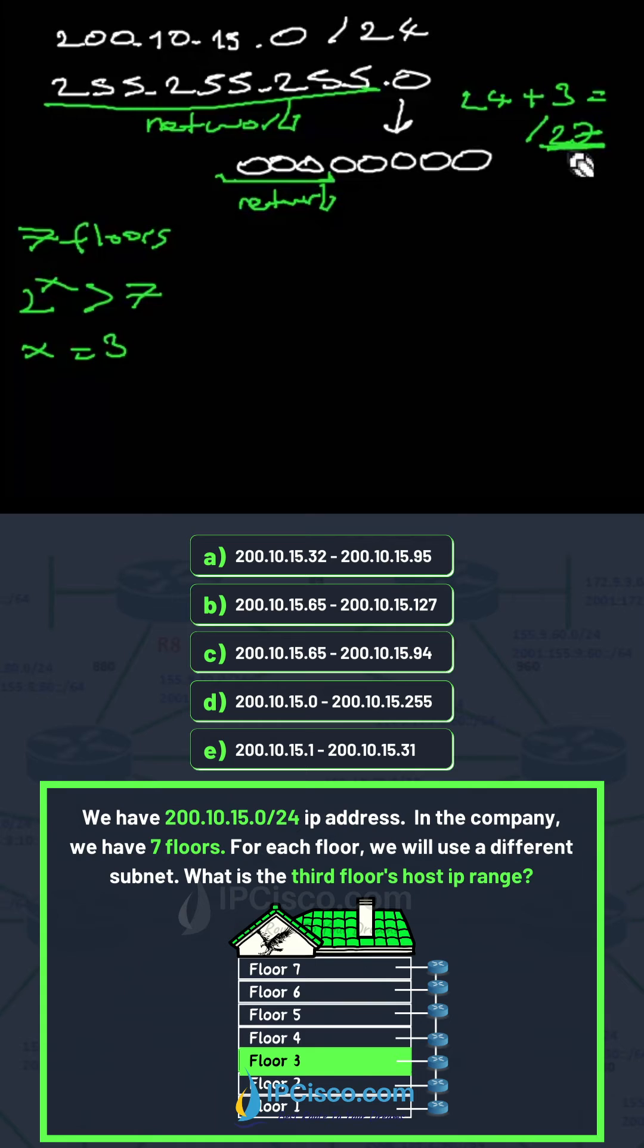We find the new CIDR value 27, and the other parts are host parts. Here, 2 to the power of 5 is equal to 32, and our increment is 32.